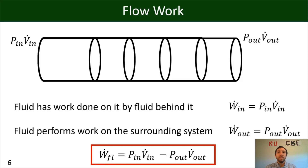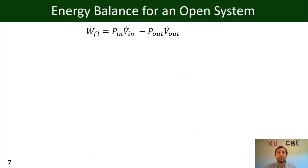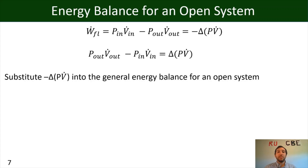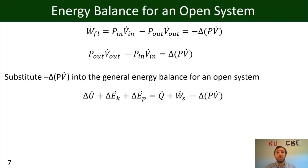When we talk about a change in something, we always refer to final minus initial state, so ΔpV̇ is really p_out·V̇_out minus p_in·V̇_in. To write flow work in terms of a delta, we write it as negative ΔpV̇, which gives us positive flow work. Substituting this into the general balance for an open system, we get: ΔU plus ΔEK plus ΔEP equals Q̇ plus Ẇ_S minus the flow work term.